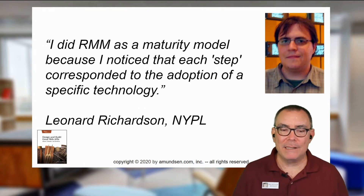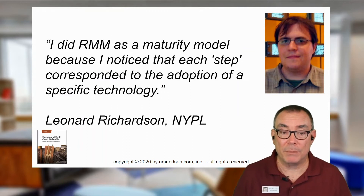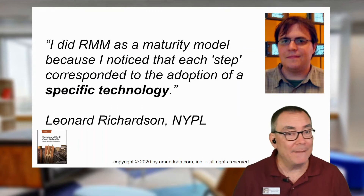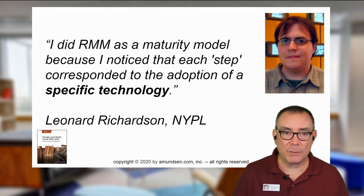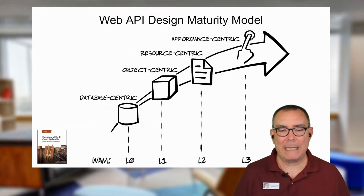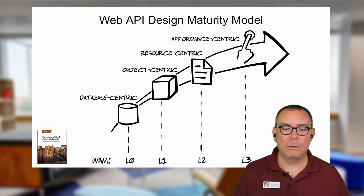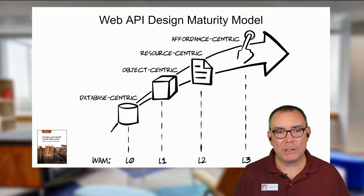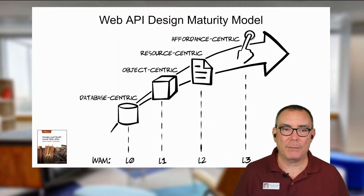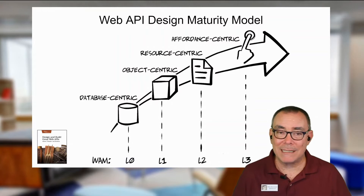He said, "I did the maturity model because I noticed that each step corresponded to the adoption of a specific technology." That's really what Leonard was talking about. He wasn't making value judgments about what's good and what's bad. Now, I took the lead from Leonard when we were talking about another aspect of it — that is, how we go about designing. Leonard was talking about how you implement and how you implement resources. I was really talking about how you describe or model them. So I have a slightly different view of this, although I use the same sort of pattern. And we'll get into this database, object, resource, affordance thinking here in just a minute.